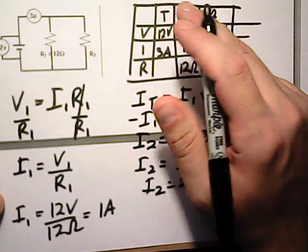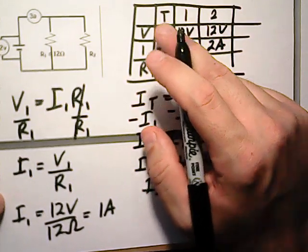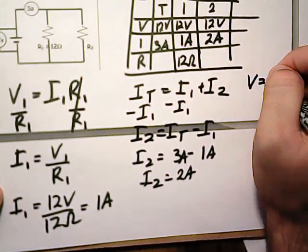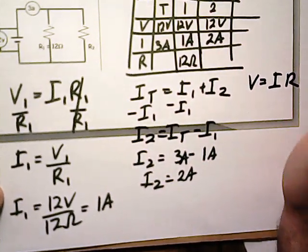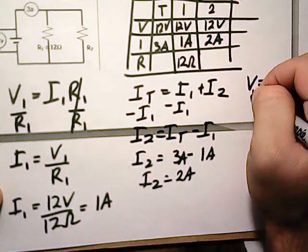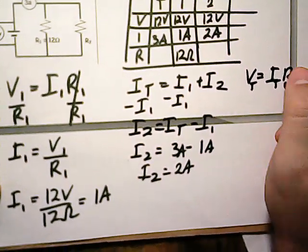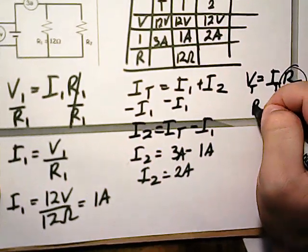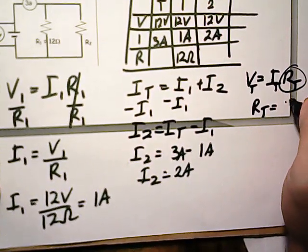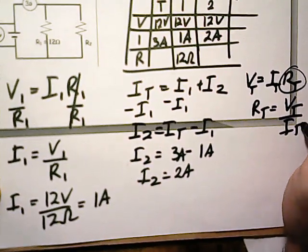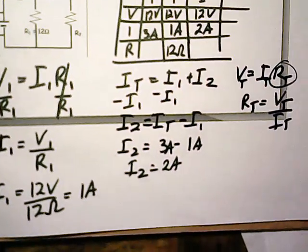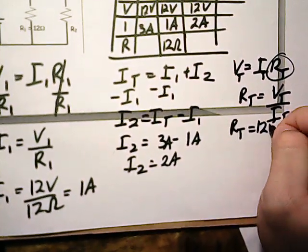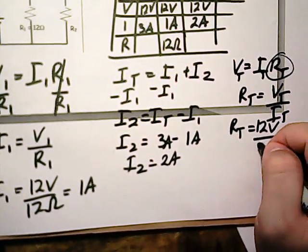Okay, so to find our resistance, V equals IR. We're solving for resistance. So V equals IR total. To solve for R, it's just going to be R total equals V total over I total. I just brought this over to the other side. So R total should be 12 volts over 3 amps.